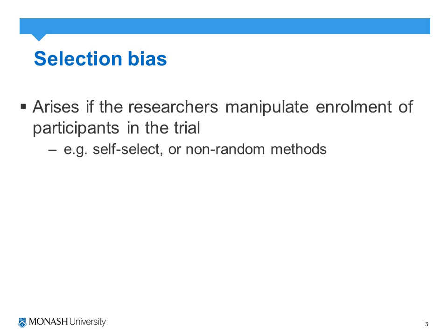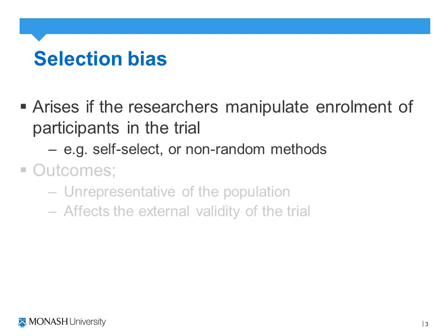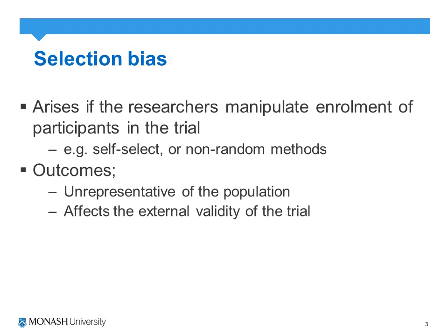Selection bias arises if the researchers manipulate the enrollment of participants in the trial in any fashion — that is, the process in which they're allocated to the intervention group or the control group is not randomized, or if patients self-select, meaning they choose whether or not they receive the intervention or the control. The obvious outcome is that we get an unrepresentative sample of the population.